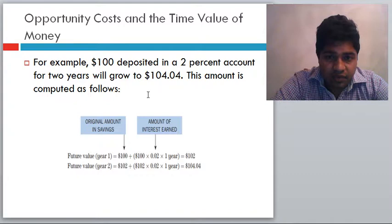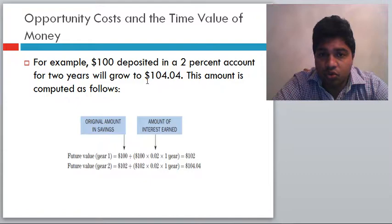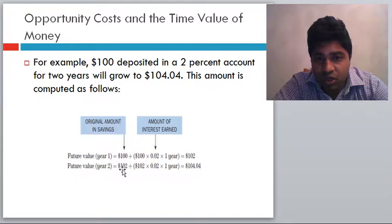An example of compound interest and future value: $100 deposited in a 2% account for 2 years grows to $104.04. Year 1: $100 × 2% = $102. Year 2: $102 × 2% = $104.04. The extra $0.04 is the result of interest on interest — this demonstrates the power of compounding.